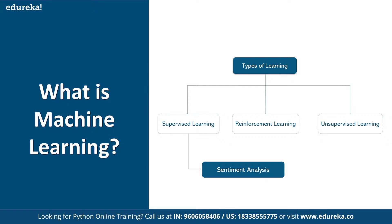In reinforcement learning, you don't have a dataset at all. Learning happens by experience through exploration and exploitation. For example, the first time you cross a busy road you might make mistakes, but over time your knowledge matures and you learn to cross it properly. You also try new ways to cross faster. That's reinforcement learning — learning by experiment and application. Sentiment analysis falls under supervised learning.